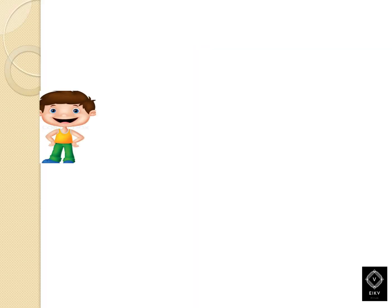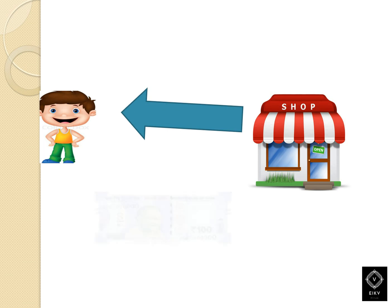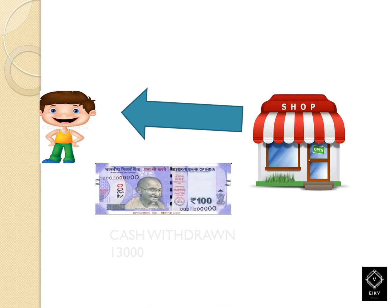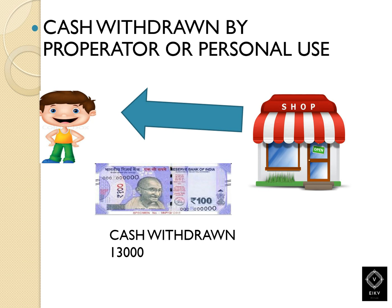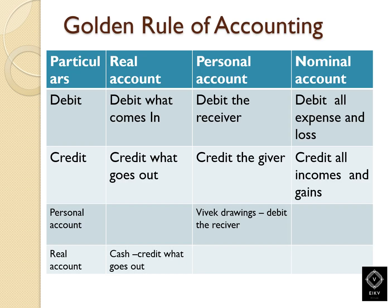Vivek is planning to withdraw a cash sum of rupees 13,000 for his personal use — he has taken the amount home. So in that scenario, how the journal entry is generally prepared.